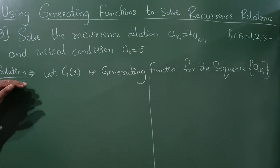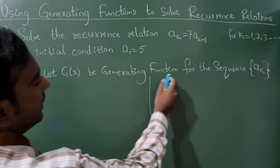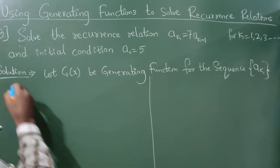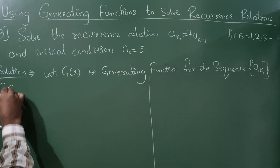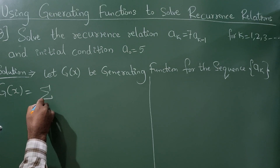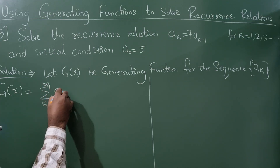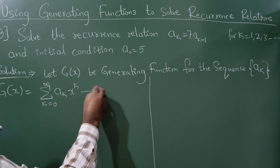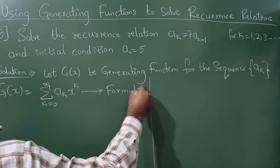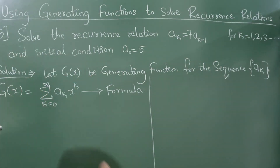Let's begin with the solution. Let g of x be the generating function for the sequence a_k. The formula is g(x) = summation of k from 0 to infinity of a_k · x raised to k.